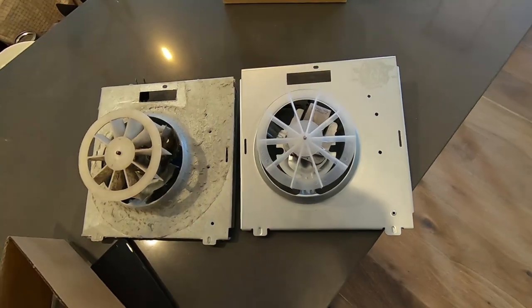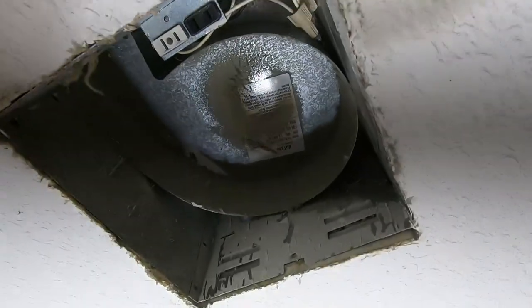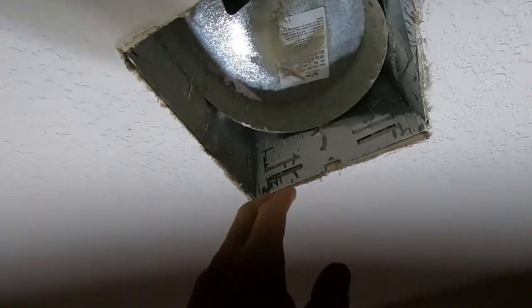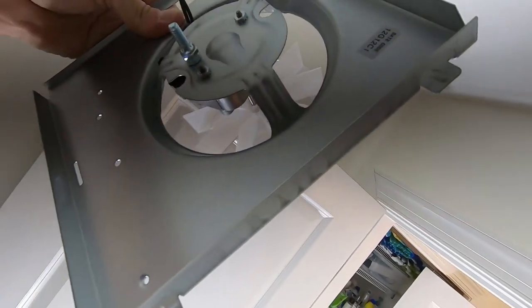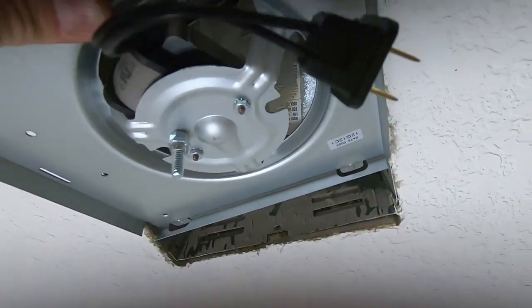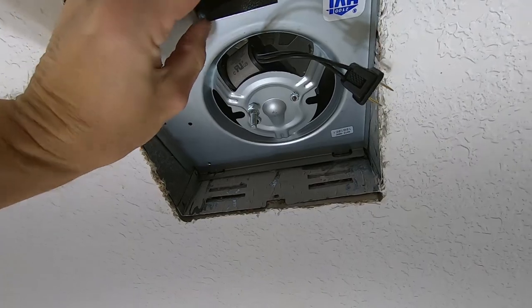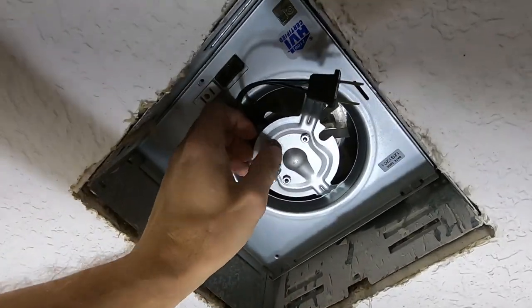Let's go ahead and see if we can get this one installed in the hole. All right, so we're back in the bathroom. Here's the slots here that these prongs need to go into. Once you have those in there, slides up, and then I just need to replace the Phillips screw.